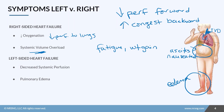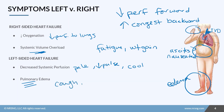In left-sided heart failure, there is decreased perfusion to the body. Signs of decreased perfusion include pallor, decreased pulses, slow cap refill, and cool skin. The congestion happens backwards into the lungs — pulmonary edema from the left side of the heart backing up. The patient will have a cough, and their sputum will be pink and frothy because of that extra blood flow within the lungs.